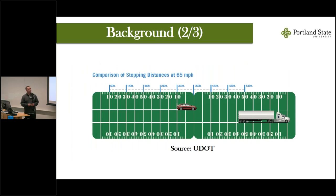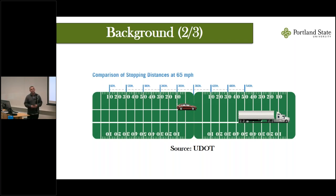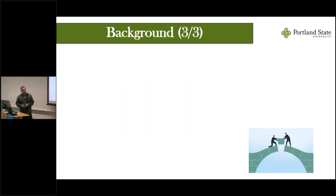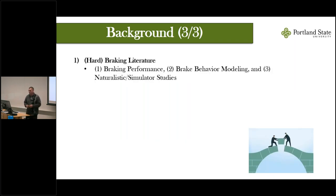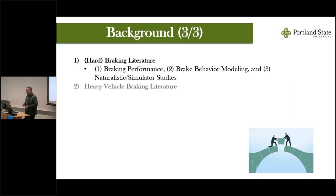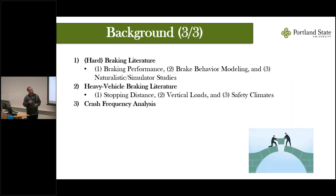To illustrate the difference in stopping distances: at 65 miles per hour, on average a heavy vehicle takes nearly double the distance to come to a complete stop compared to a passenger vehicle. Looking at the literature, studies on hard braking mostly focus on braking performance, brake behavior modeling, or naturalistic and simulator studies — none focusing explicitly on heavy vehicles. Studies on heavy vehicles tend to focus on stopping distance as a byproduct of the safety standard amendment, with some work on vertical loads and safety climates of long-haul drivers.